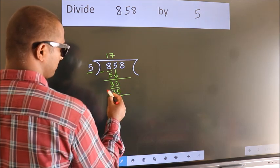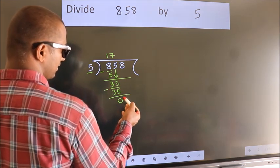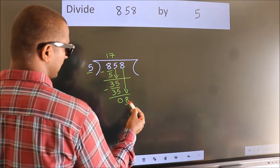Now we subtract. We get 0. After this, bring down the beside number. So 8 down, so 8.